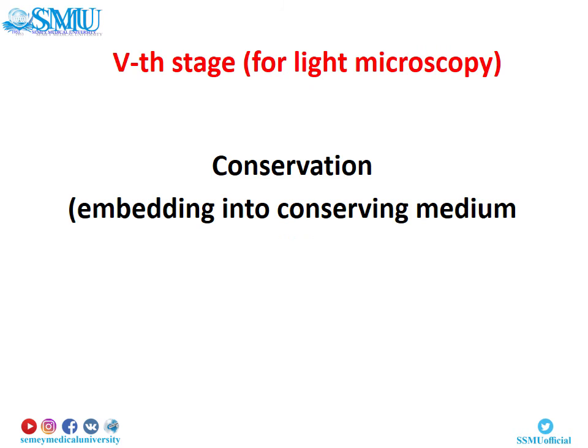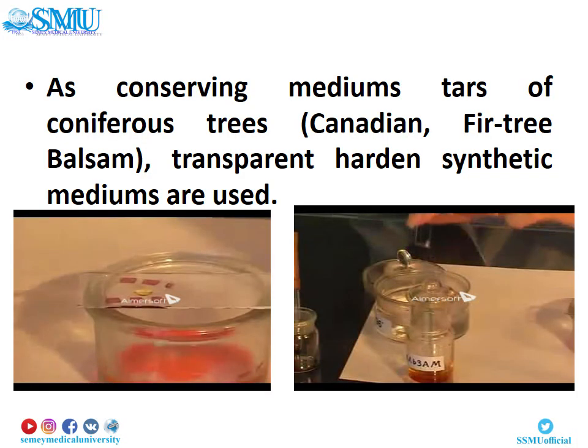Stage number 5: for light microscopy, this stage is called conservation or embedding into conserving medium. For long-term keeping, the histological section is placed between the stage glass and covering glass. As conserving mediums, resins of coniferous trees and transparent hardened synthetic mediums are used.